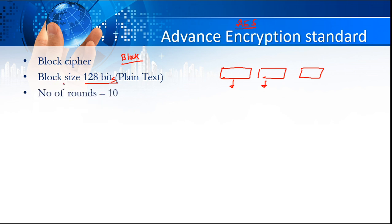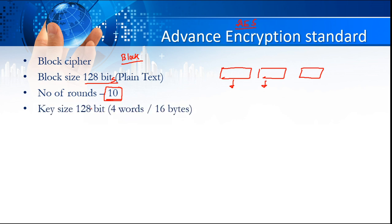The next point about the Advanced Encryption Standard is it uses 10 rounds. When I compare it with DES, DES was having 16 rounds. But even though AES has 10 rounds, which is less than 16, it is going to be more secure when we compare it with the DES.